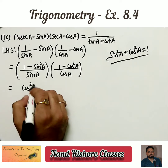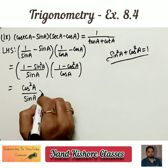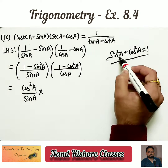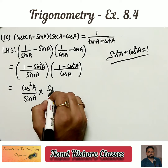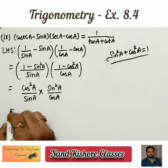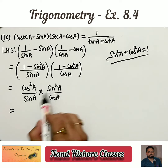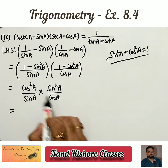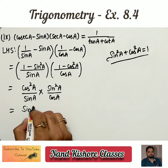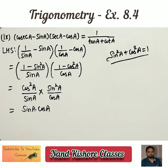1 minus sin square a gives cos square a, so I write cos square a upon sin a. 1 minus cos square a gives sin square a, so I write sin square a upon cos a. Now one sin in the numerator cancels with one sin in denominator, and one cos cancels, and finally we get sin a times cos a.